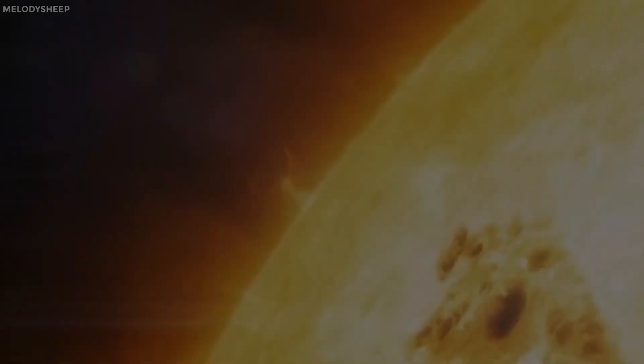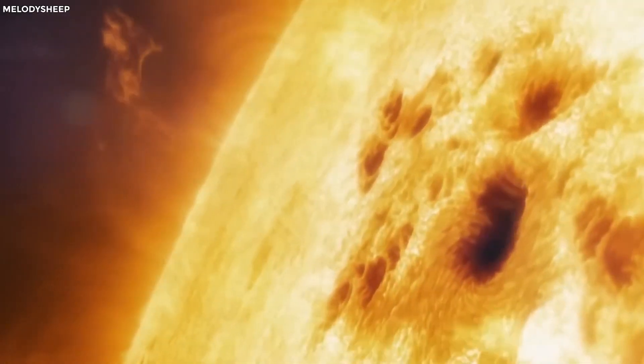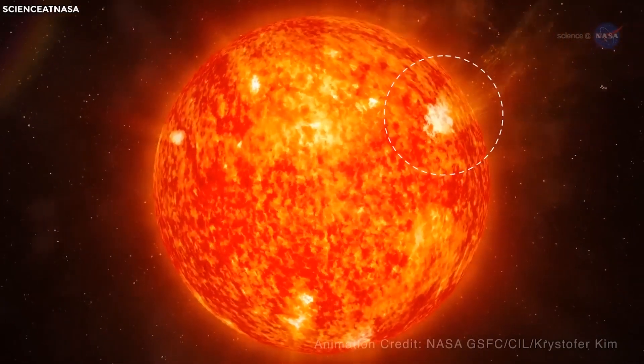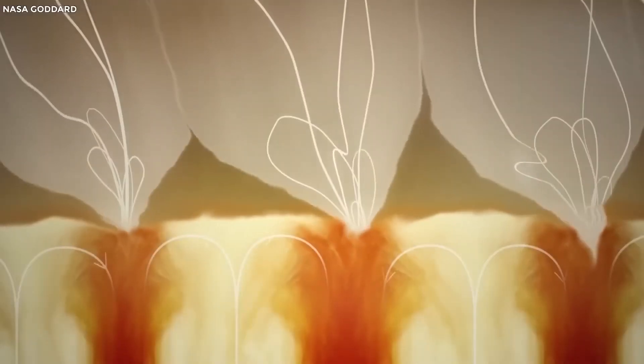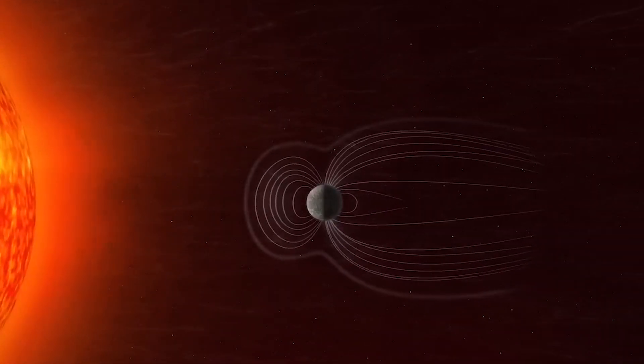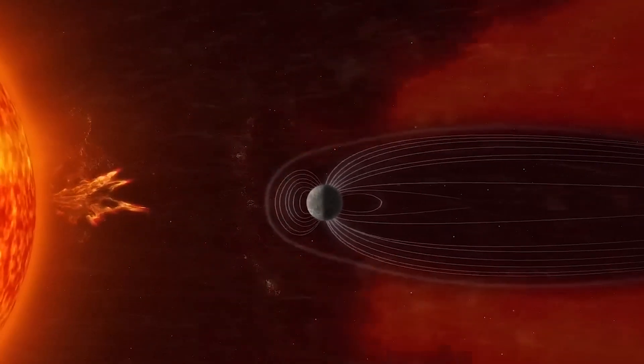Solar flares occur when the stored magnetic energy in these sunspots is suddenly released, blasting out a torrent of high-energy particles. In essence, solar flares are explosive events that release a significant amount of energy in a short period of time, while solar wind is a steady flow of particles that constantly emanates from the Sun. Solar flares are classified into three types: C, M, and X.